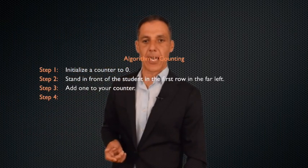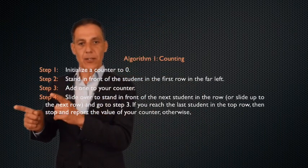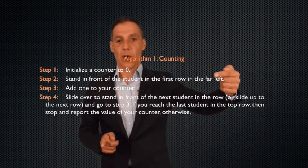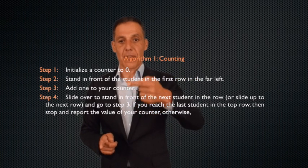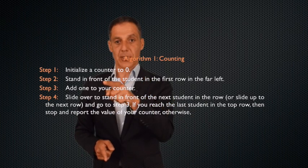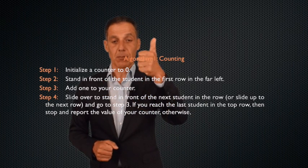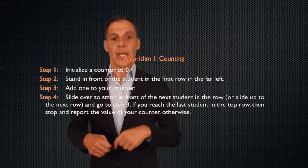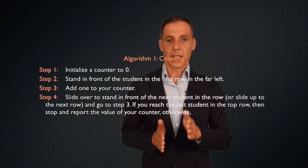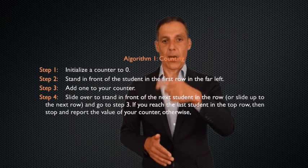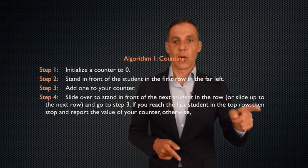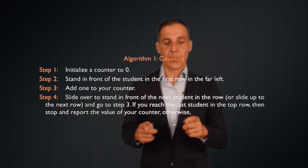The last step of the algorithm is slide over to stand in front of the next student in the row, or slide up to the next row, and then go back to step three. So I've counted one, I slide over, and I say go to step three. What does step three say to do? Plus one. Count one. And then where do I go? I go back to step four. Slide over, go back to step three, count one, I've got three. And let's look at the last clause. If you reach the last student in the top row, then stop and report the value.